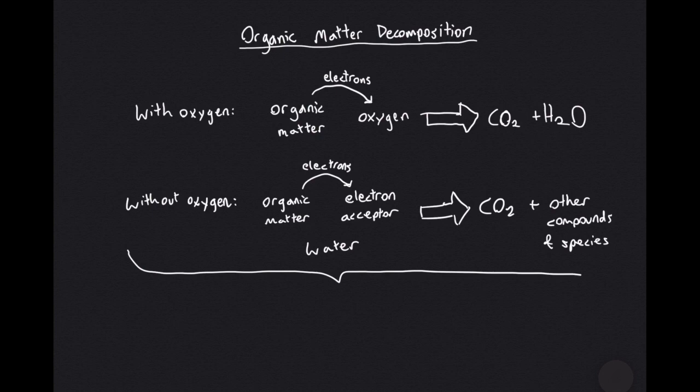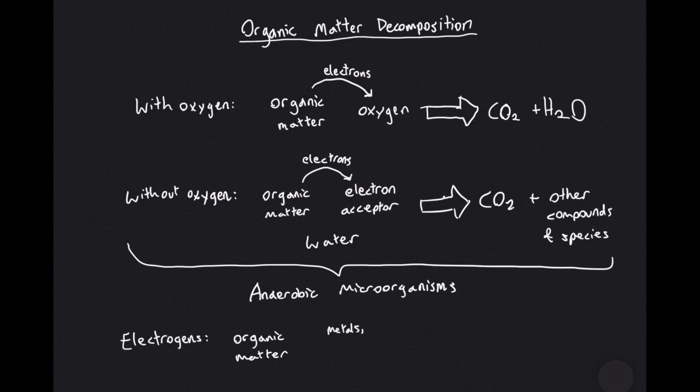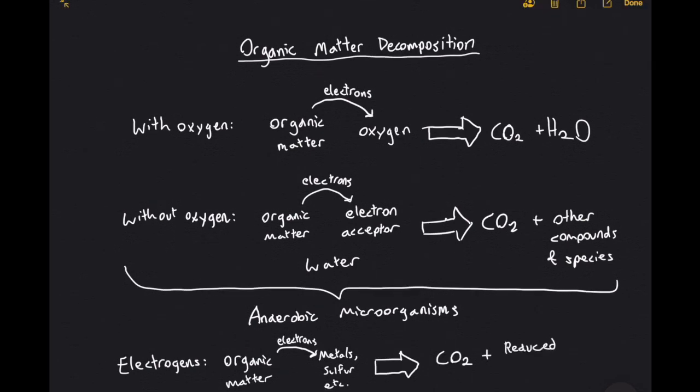For electrogens, which are a type of anaerobic microorganism, the electron acceptor can be a metal such as iron, or a non-metal such as sulfur, or an organic compound such as fumarate.